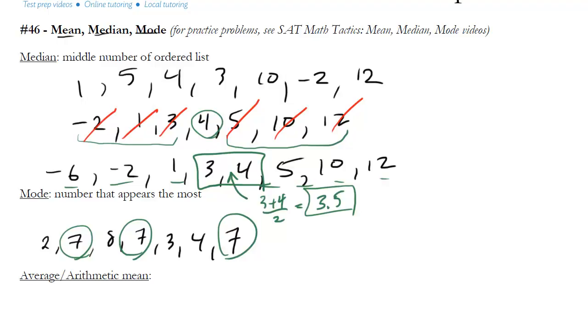Now unlike the mean and the median, you can actually have more than one mode. So if I gave you the list 2, 7, 8, 8, 7, 3, 8, 2, 7.